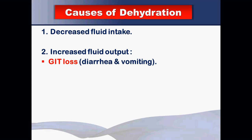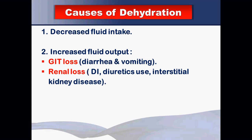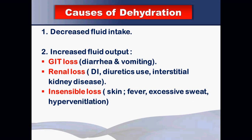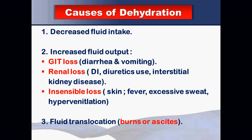Increased fluid output divides into three causes: GIT loss (most common) — diarrhea and vomiting; renal loss, as in diabetes insipidus, diuretic use, or interstitial kidney disease; and increased insensible water loss through the skin (perspiration) as in fever, excessive sweating, hot weather, or hyperventilation. The third category is fluid translocation from one compartment to another, such as in burns or ascites, leading to decreased total body water and hypovolemia.